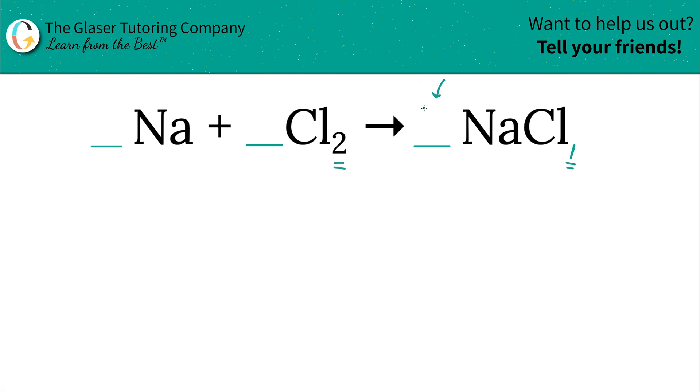Now all you have to think about is multiplicatively some number, right? Some number multiplied by one better equal two. Because you need two chlorines on the right hand side. So what would that number be? Well, that number would simply be a two, right?